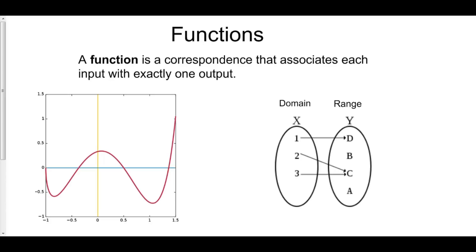So what is a function? Well, a function is a correspondence that associates each input with exactly one output. So for example, consider your inputs x and your outputs y. We call the input the domain and the output the image or the range.